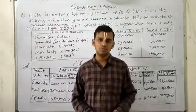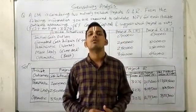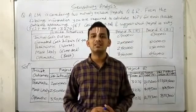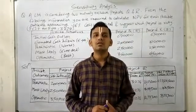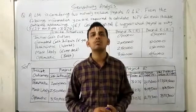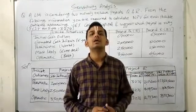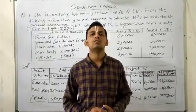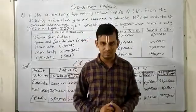In the last couple of videos, we have discussed about the Certainty Equivalence Method which is used for Risk Analysis in Capital Budgeting. It is considered a more reliable and viable method because rather than adjusting discounting factors, it adjusts expected cash flows. That is why it is considered reliable.